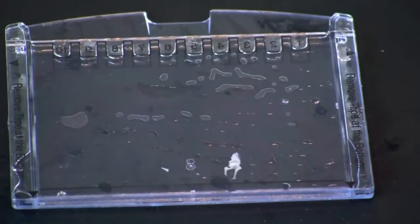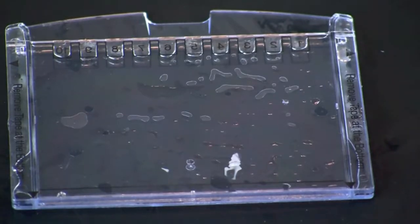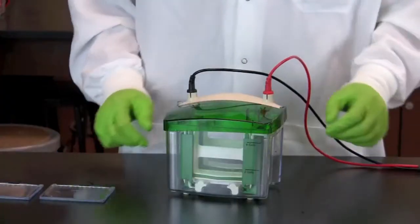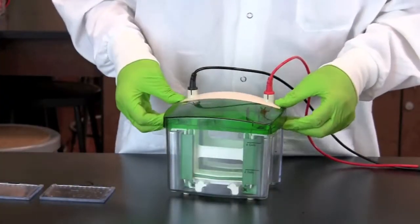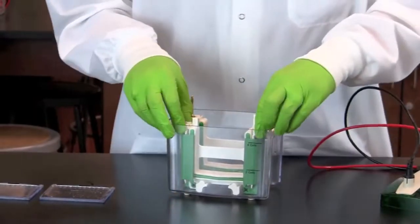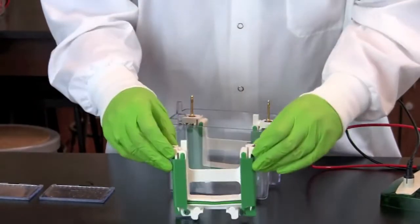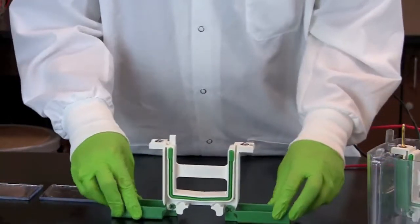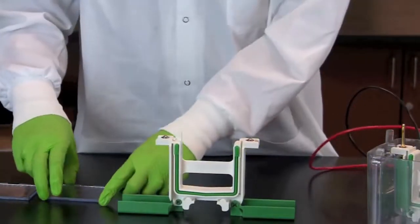Notice the gel has two plates, a short plate on one side and a long plate on the other. To set up the vertical electrophoresis system, remove the electrode assembly from the tank and open the green clamps. Place a gel into the electrode assembly with the short plate facing inward.